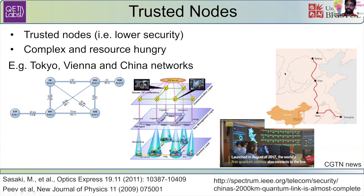Trusted nodes are the assumption that I can send a signal from node one to node two. Node two can repeat the signal and send it to node three, but therefore you have to trust that node two will not reveal your secret.